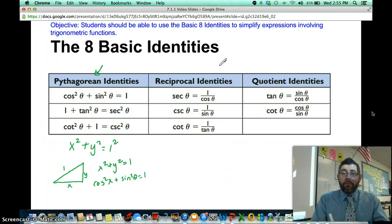The reciprocal identities we've gone over in the past. You already know that secant is 1 over cosine, cosecant is 1 over sine, and cotangent is 1 over tangent. It's the reciprocal of tangent.